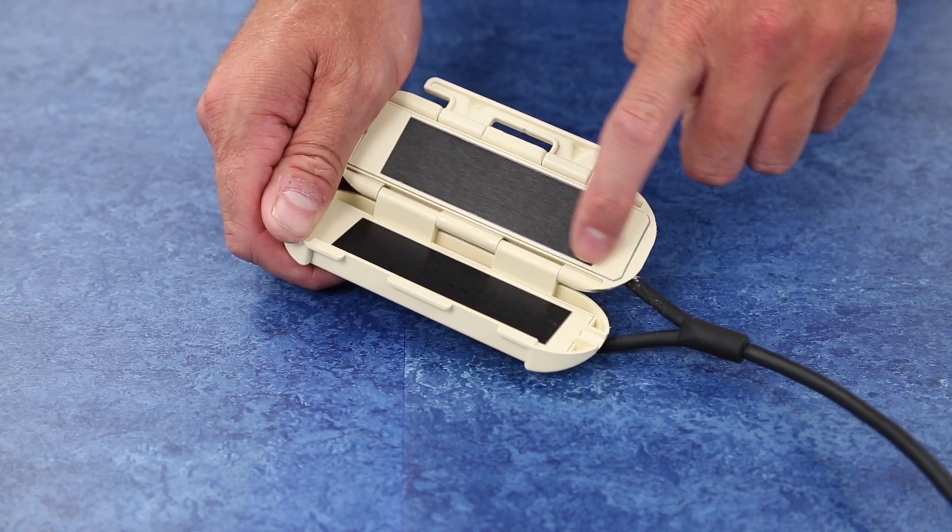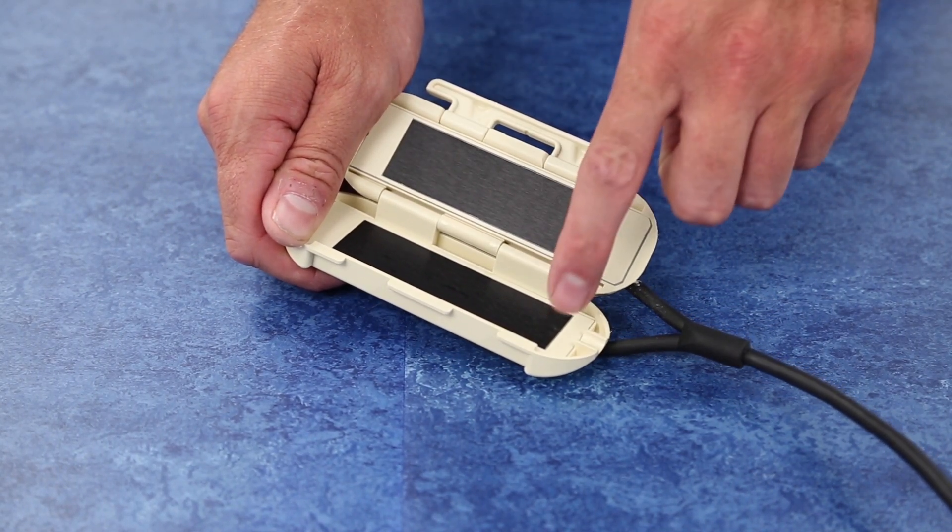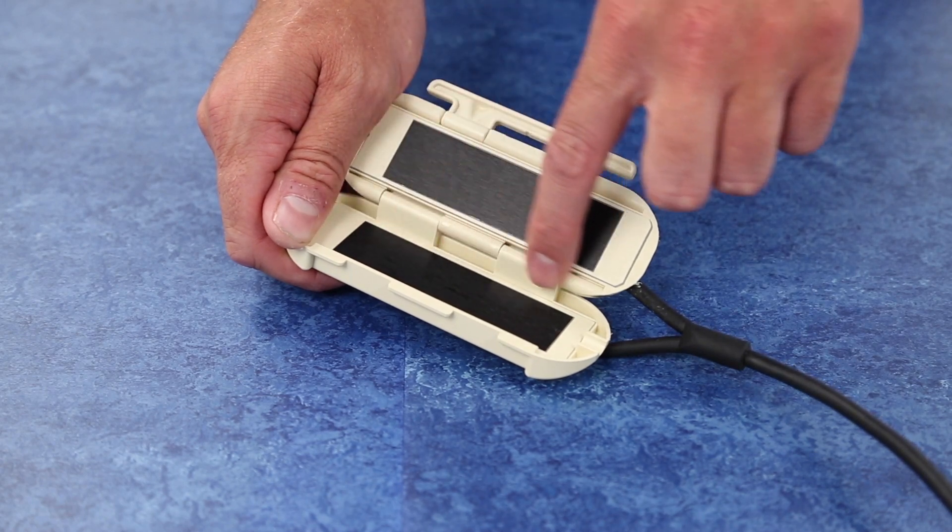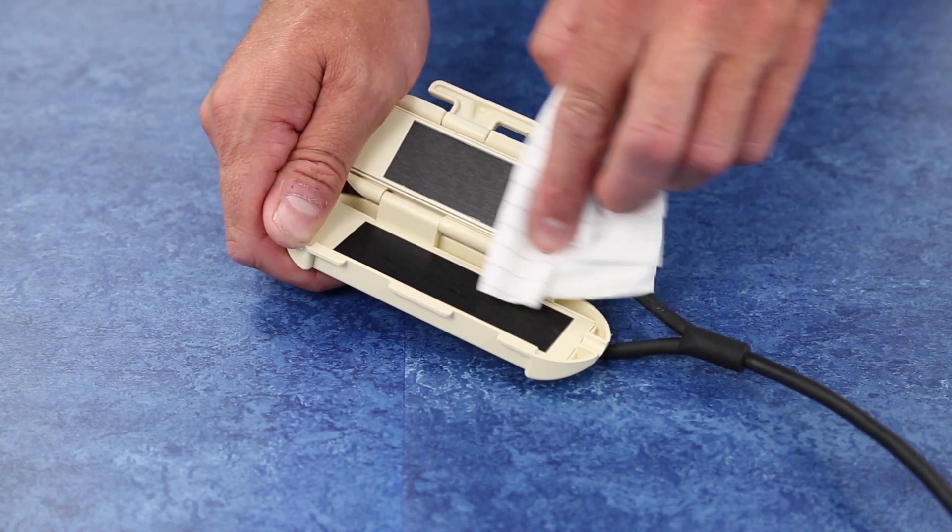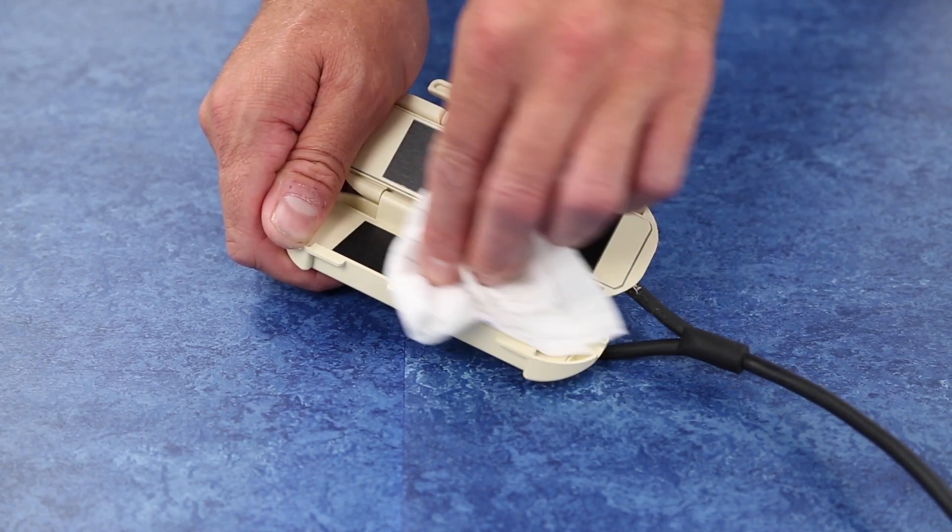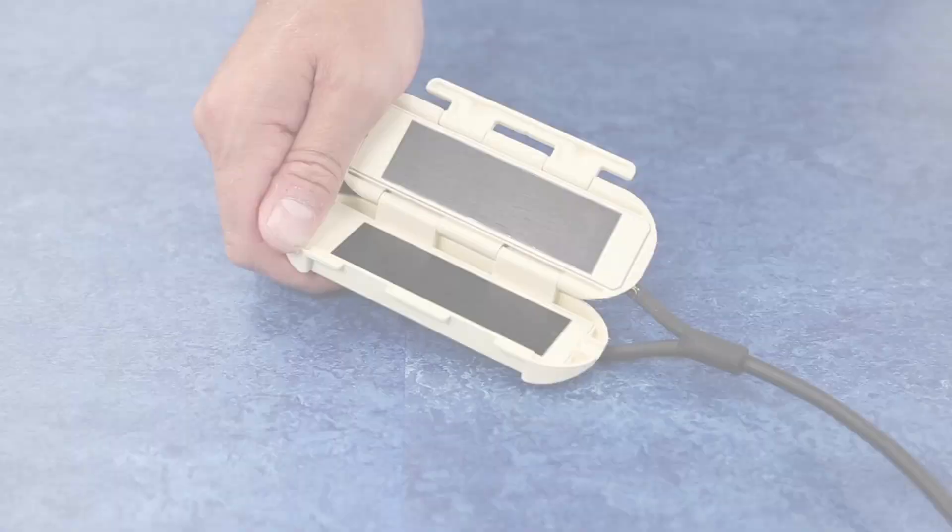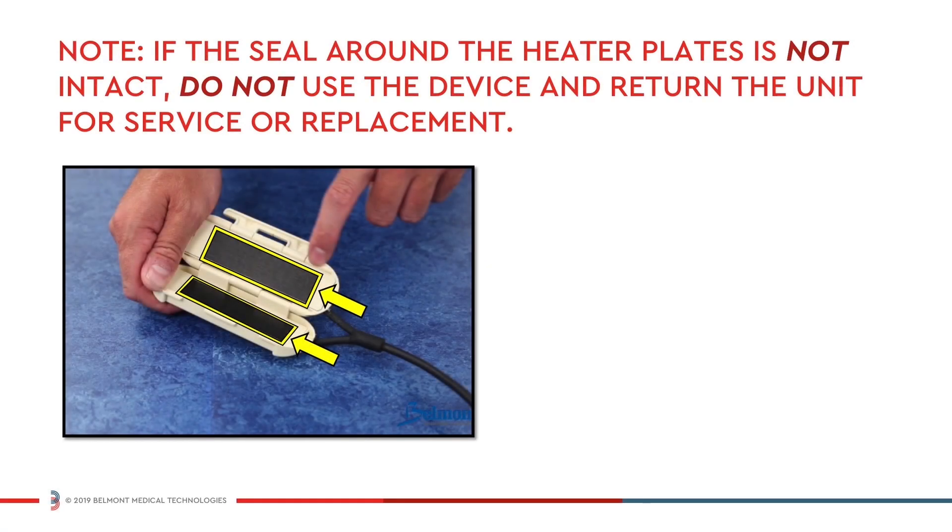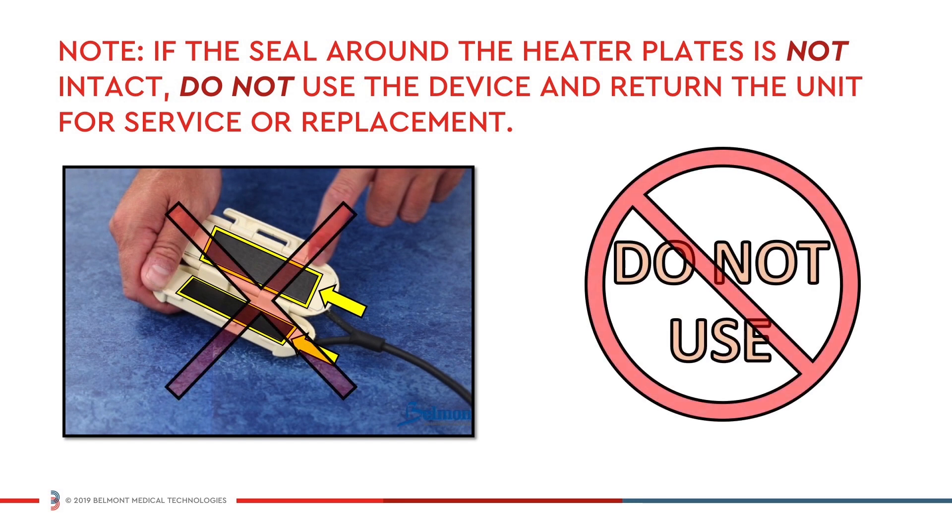Open the heater unit and inspect the seal around the heater plates. If the seal is intact, wipe the heater plates with a 10% bleach solution and then dry completely. Note, if the seal around the heater plates is not intact, do not use the device and return the unit for service or replacement.